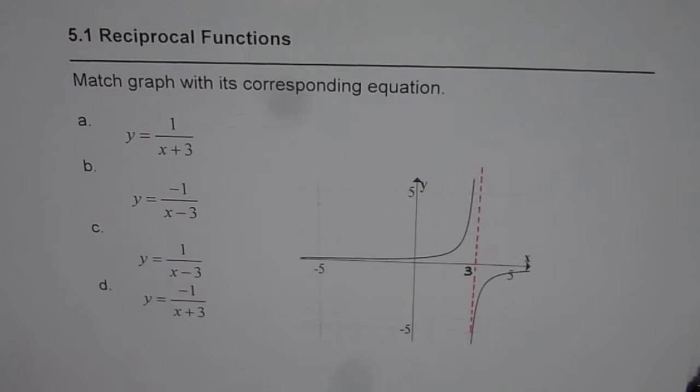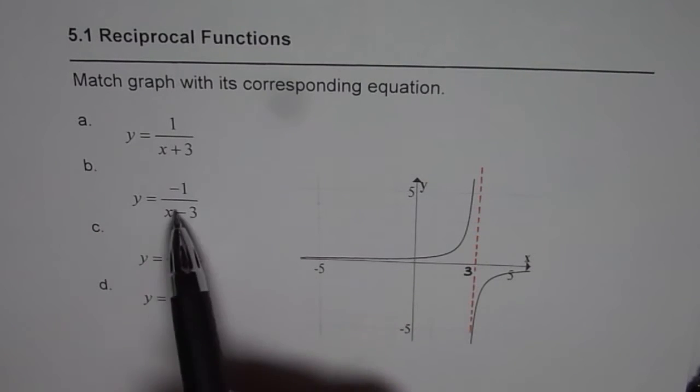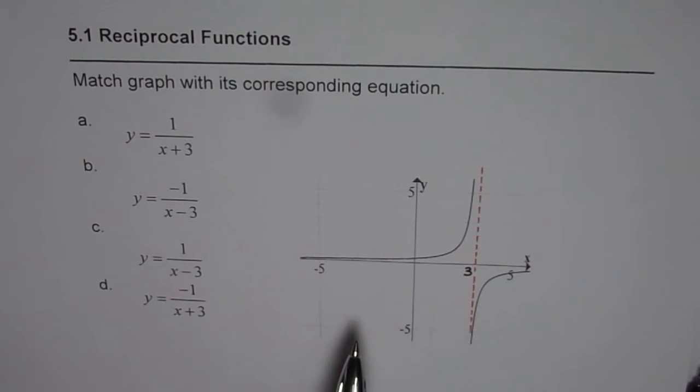Now here we have a graph. I have clearly marked a vertical asymptote which is at x equals to 3. You need to match out of these four given equations which one represents the given graph for us. You can pause the video, write down the answer, and then look into my suggestion.